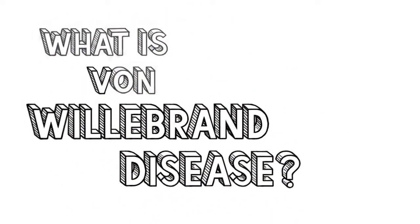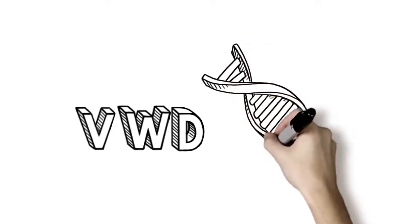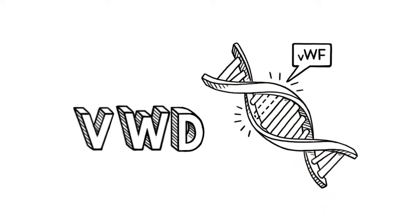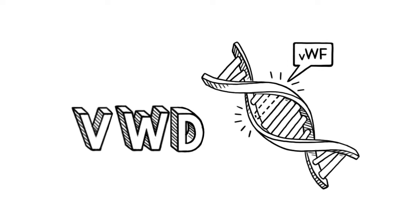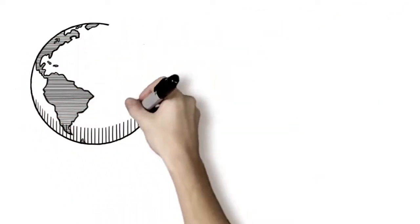Von Willebrand disease or VWD is a genetic disorder caused by a missing or defective clotting protein in the blood called Von Willebrand factor. VWD causes prolonged or excessive bleeding.